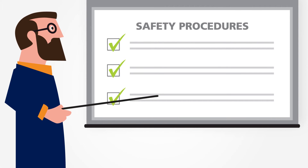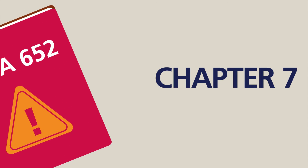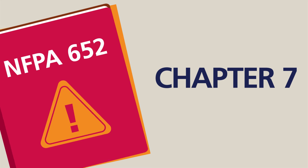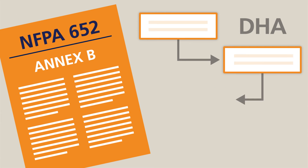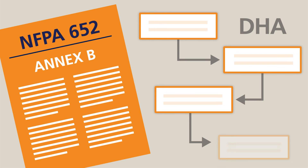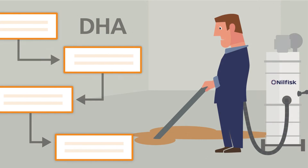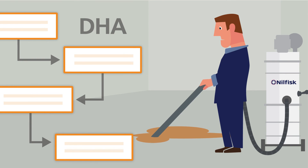Chapter 7 of NFPA 652 provides detailed descriptions and explanations of DHAs. You can also find a complete step-by-step example of how to create a DHA in Annex B. As an employer, you must take this DHA process very seriously because it will serve as your roadmap to prevent and remove the risk of combustible dust.